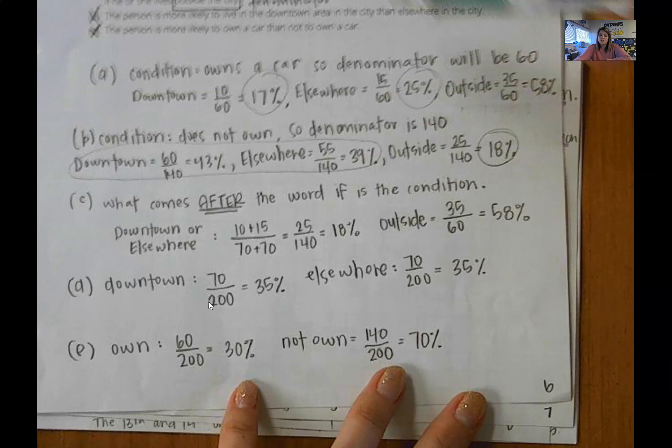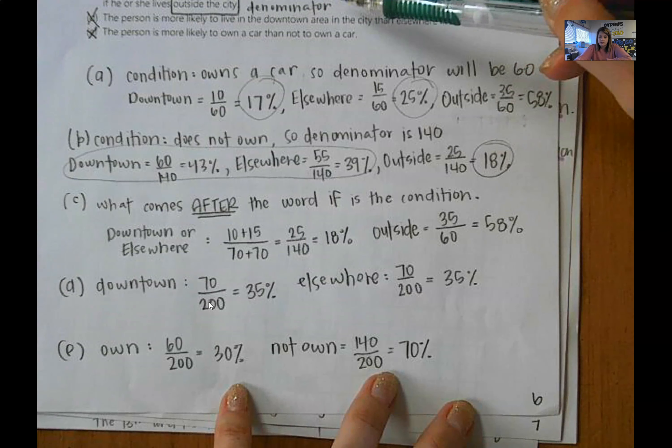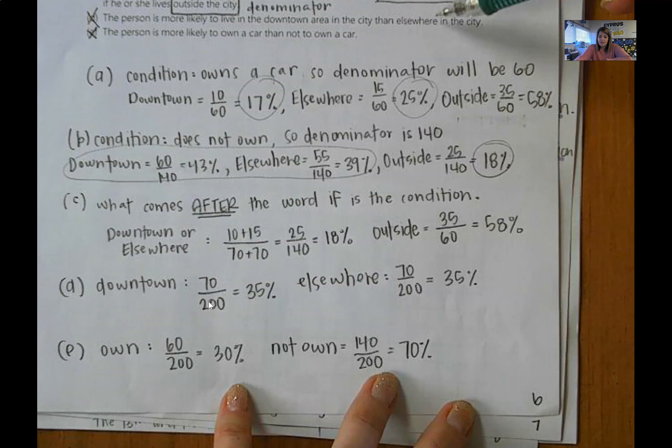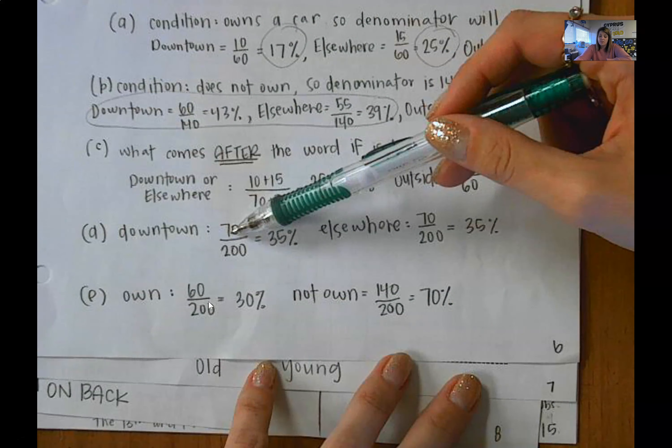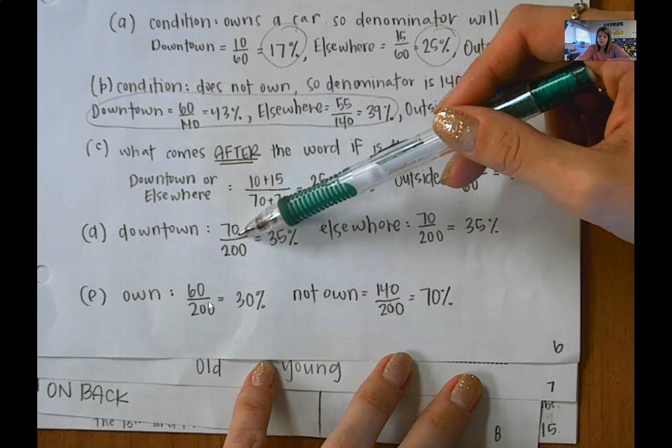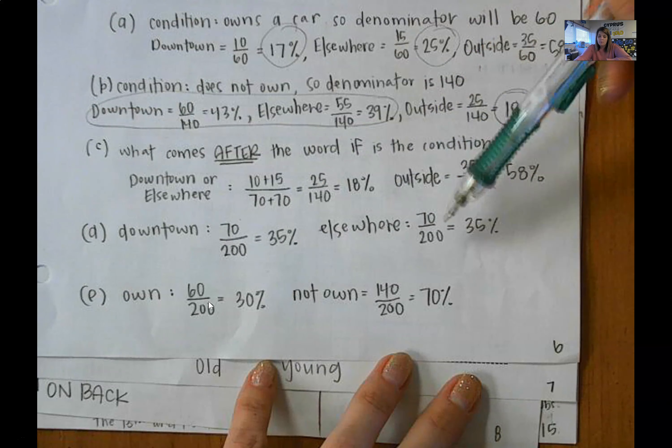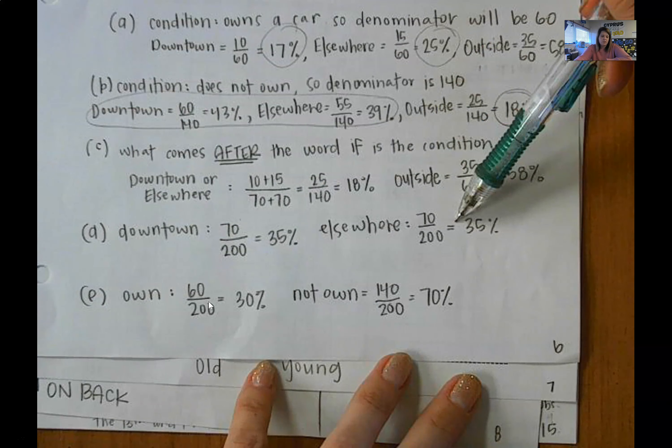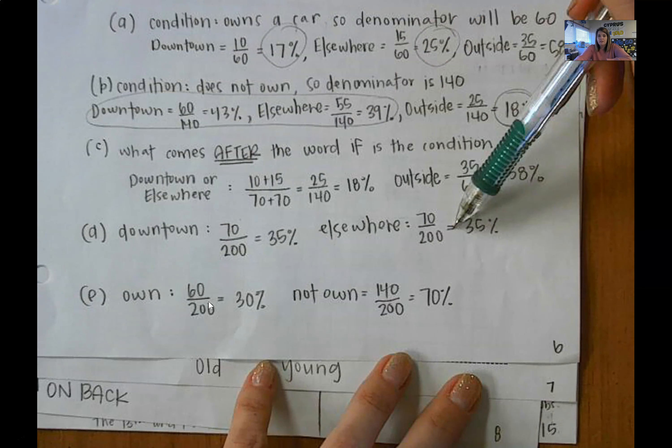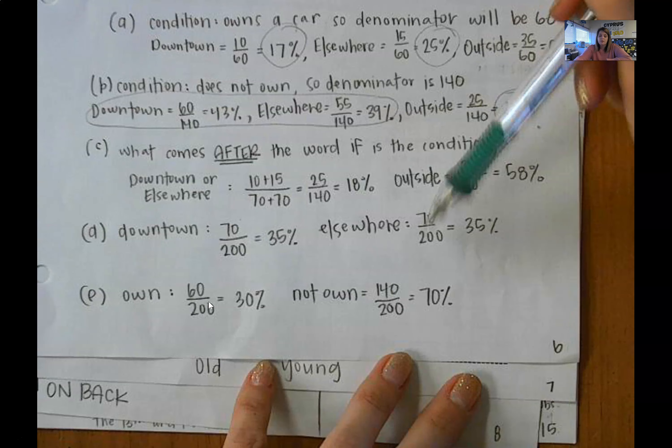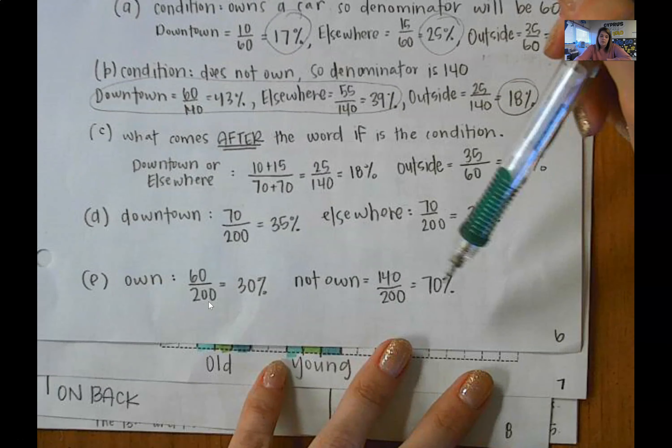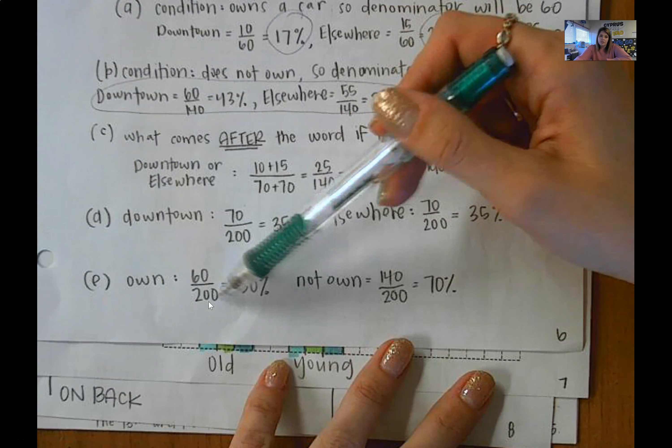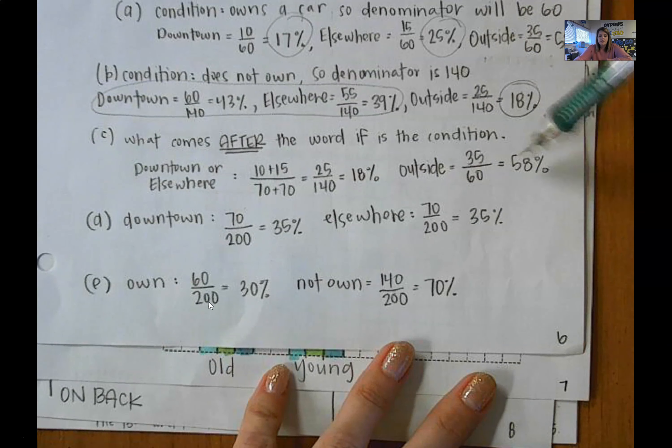D the person is more likely to live downtown than in an area elsewhere. So they want you to find what percent live downtown. What percent of everybody lives downtown. There's no condition. There's not the word if what percent live elsewhere. More people and just kidding the same amount of people live downtown as elsewhere. And lastly, it's more likely to own a car than not. Nope. Owning a car is 60 out of 200. Not owning is 140 out of 200. There is no if in the problem. So you don't have a condition.